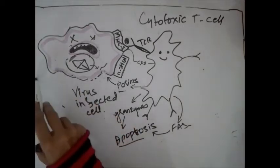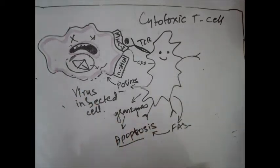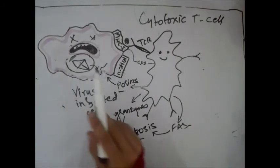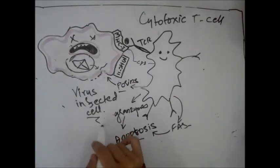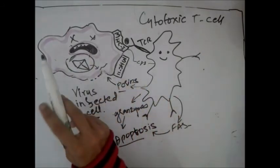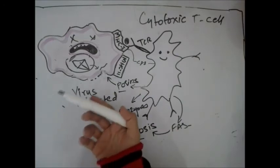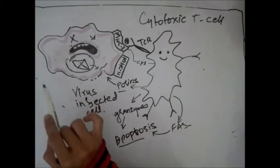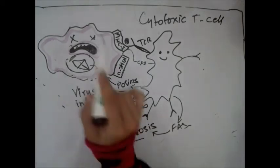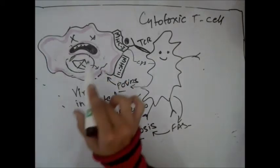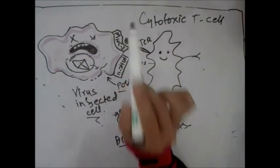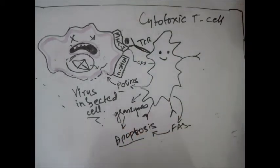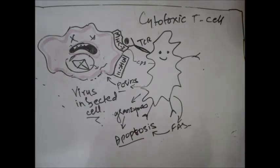Cytotoxic T-cells work against virus-infected cells and against cells presenting antigen with MHC1. This process also involves cross presentation. That is the summary of cytotoxic T-cell activity.